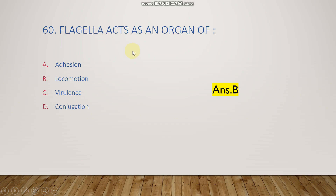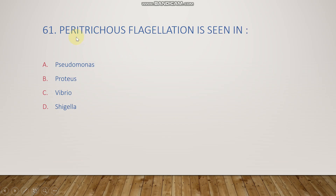Peritrichous flagellation is seen in Pseudomonas, Proteus, Vibrio, or Shigella? The right answer is option B, Proteus. Peritrichous flagella means flagella are present all over the bacterial body.